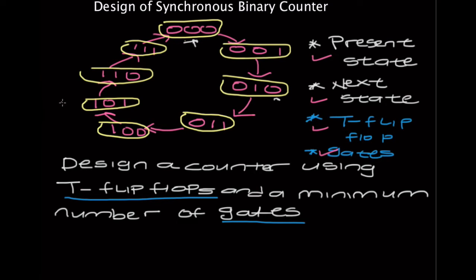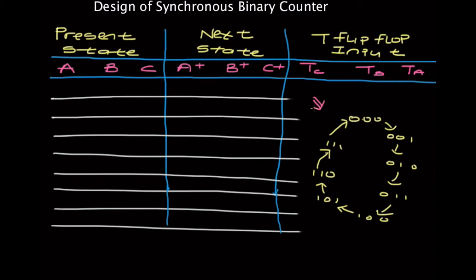After knowing our parameters, the next thing we need to do is make a table for the present state, the next state, and the T flip-flop input. This diagram is similar to the diagram given to us in the example. And to make things easier, let's call the first bit A, the second bit B, and the third bit C. So let's say 0, 0, 0 was the present state — 0, 0, 1 will become your next state.